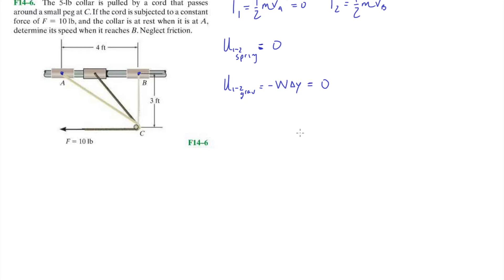What else? Let's think. Neglect friction. So is there any work done by a non-conservative force, which is friction? No, there isn't. So by a non-conservative, let's call it NC, also zero, because there's no friction. Huh. That's interesting. So there's no spring. There's no gravitational. So what's the only thing that's left for us here?